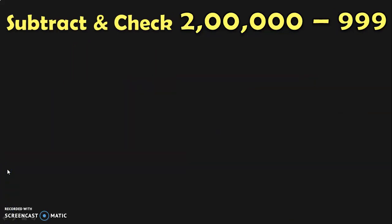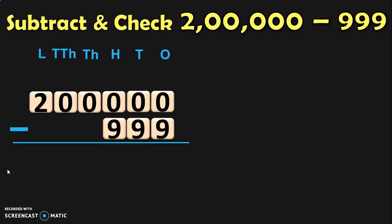Let us do the next sum. Subtract and check: 2 lakhs minus 999. Here we are going to subtract a 3-digit number from a 6-digit number. Write down the numbers and their place values. Begin the subtraction from the 1s place. In the 1s place we see 0 minus 9. We know that 9 is greater than 0. You move to the 10s place — again 0 minus 9 — and in the 100s place it is also 0 minus 9. You cannot borrow from these digits. Moving to the 1000s place and 10 thousands place, you also have only zeros. So you move to the lakhs place directly for borrowing.